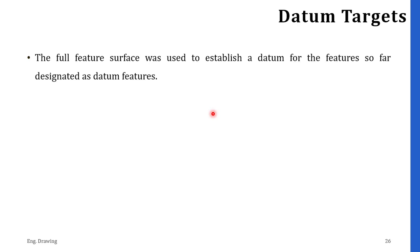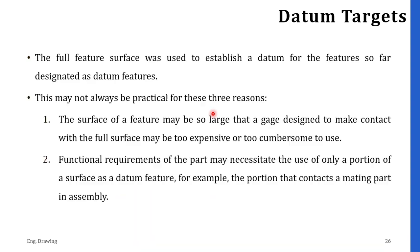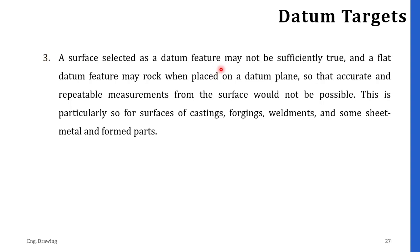Now let's move to datum targets. The full feature of the surface was used to establish a datum, designated as the datum feature. But this may not always be practical due to three reasons. First, the surface of a feature may be so large that a gauge designed to contact the full surface is highly expensive or too cumbersome. Second, the functional requirement may necessitate the use of only a portion of a surface as a datum feature — for example, the portion that contacts a mating part in assembly. Lastly, the surface selected for the datum feature may not be sufficiently flat and may rock when placed on a datum plane, so accurate and repeatable measurement would not be possible.